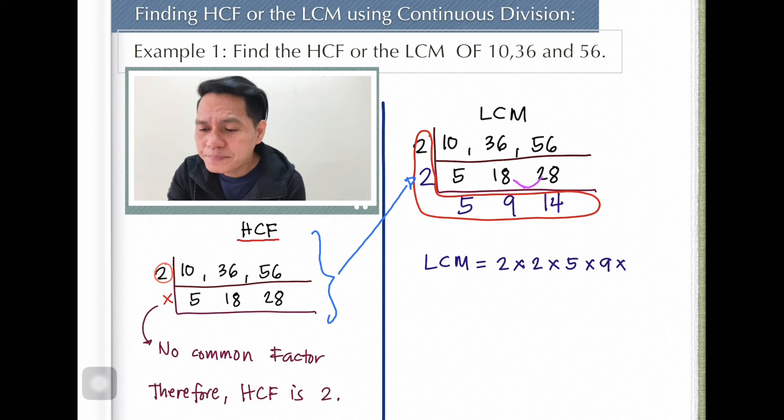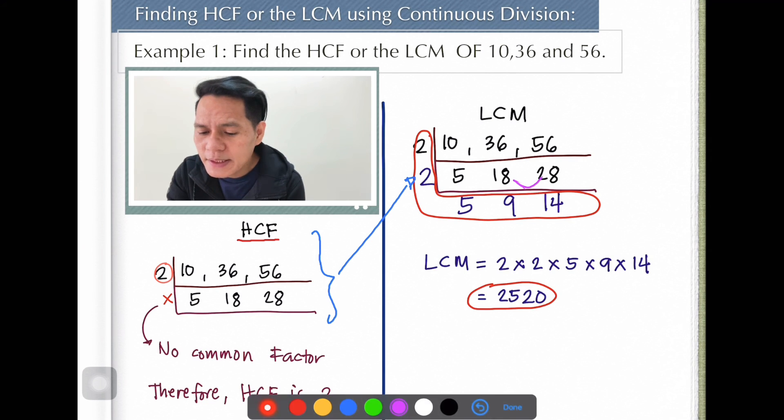And then, what happened now is I am just bringing down 5. I'm bringing down 5. And then since 18 is divisible by 2, there you go. You have 9. And then 28 divisible by 2, and then 14. So we didn't do anything with 5. We just bring it down.